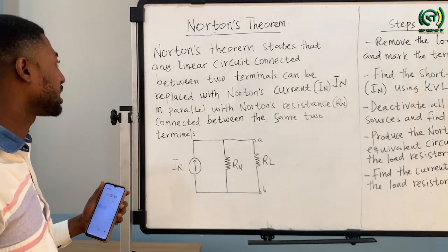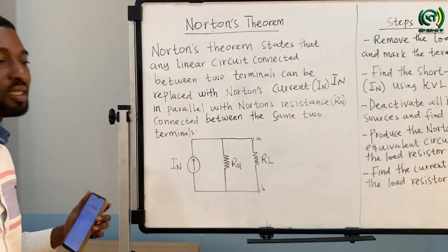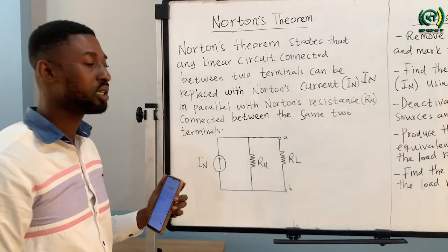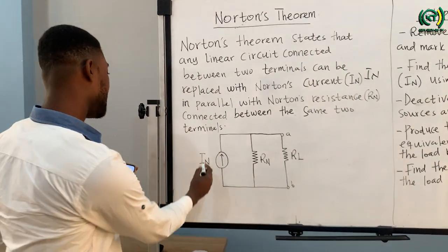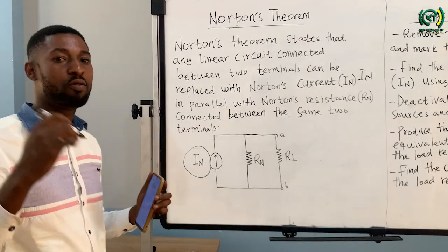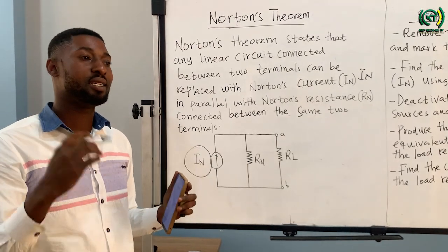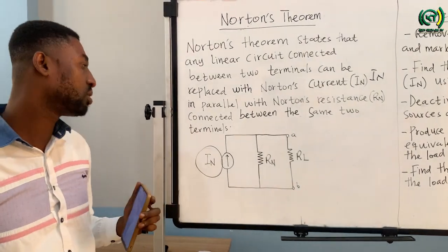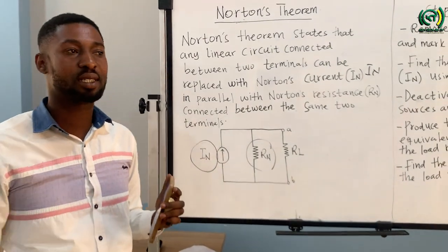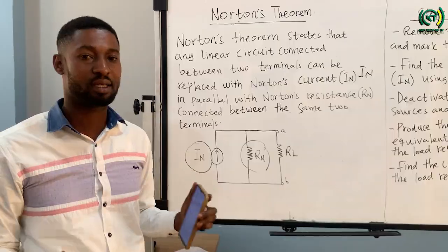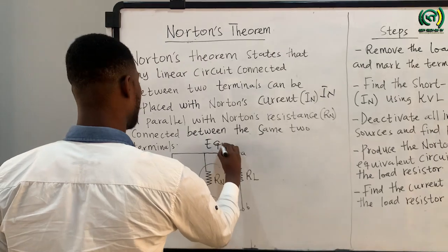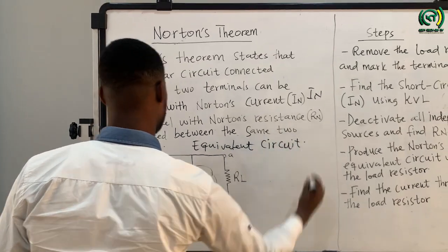Anytime we have a circuit, Norton's theorem says we can represent it with Norton's current in parallel with Norton's resistance. This IN represents Norton's current, and it is the current that flows through the short circuit path. The RN is the Norton's equivalent resistance, which is the resistance seen between the two terminals. This circuit diagram represents Norton's equivalent circuit.